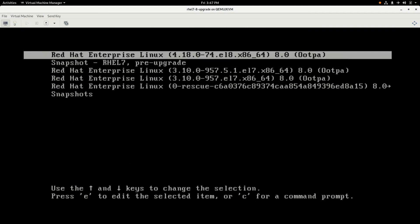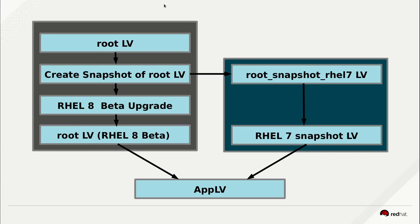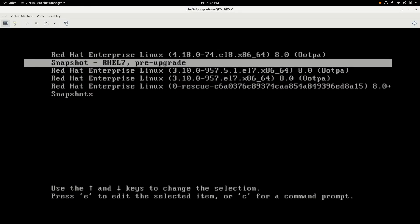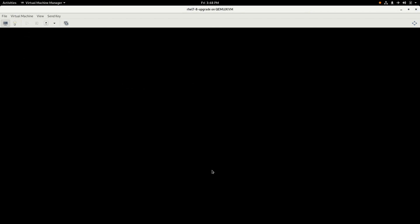Here we are on the Grub boot menu. Let's take a look back at our diagram to show where we're at. The top menu item in the Grub boot menu is going to be the root logical volume running RHEL 8 Beta. We also have the RHEL 7 snapshot logical volume available to be booted from Grub as well. In either case, if we boot from the RHEL 8 root or the RHEL 7 snapshot, we are going to mount the same app logical volume. So back on the Grub menu, what we're going to do is boot into the RHEL 7 snapshot.